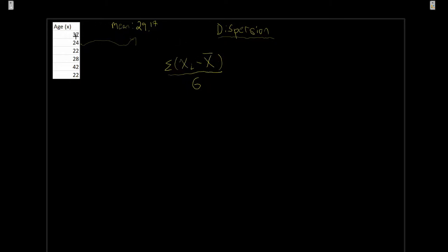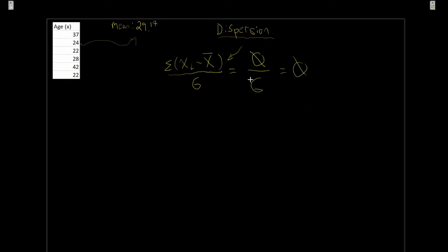It seems to make sense. Deviation one would be 7.83, the next one roughly 5.17. We'd add all of these up and divide by six. But this doesn't quite work, because going back to a principle of the arithmetic mean: if we take the sum of all deviations from the mean, that numerator equals zero — meaning zero over six is just zero, no matter how we try it.